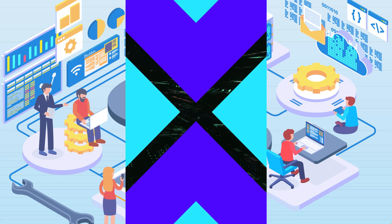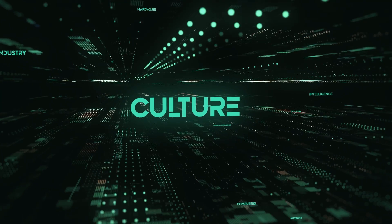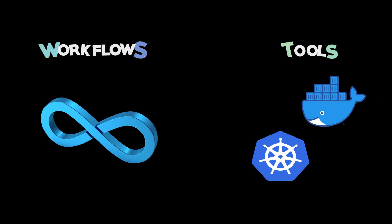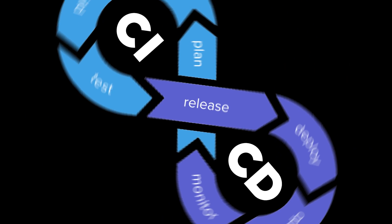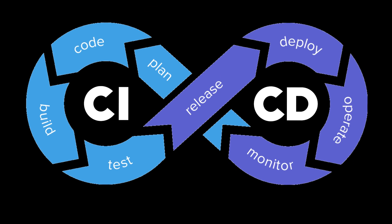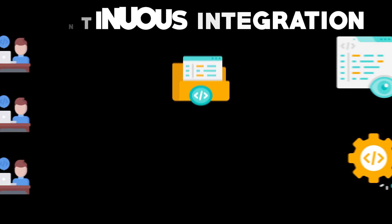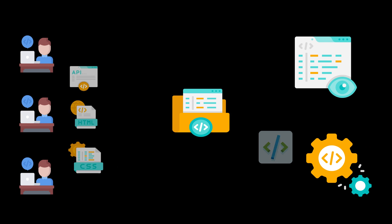While DevOps was initially meant to be a cultural shift, it is often reduced to its workflows and tools in today's world. The backbone of a DevOps workflow is CI/CD — continuous integration and continuous delivery. Continuous integration describes a practice where developers commit their code changes to a shared repository as often as possible, triggering automated processes for building and testing.